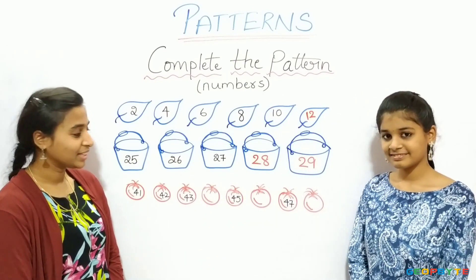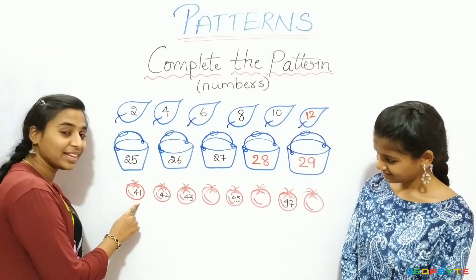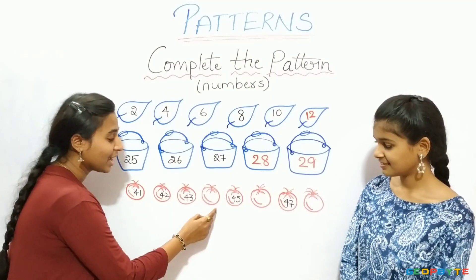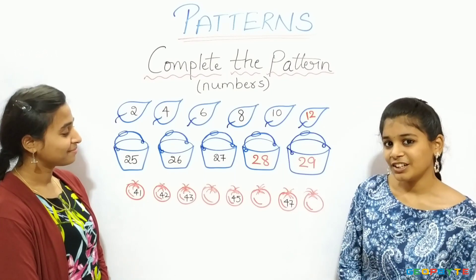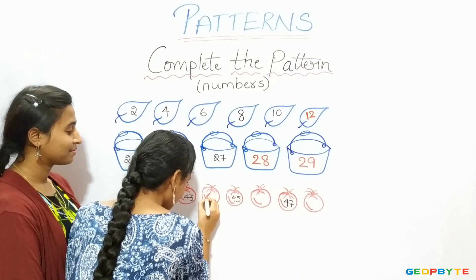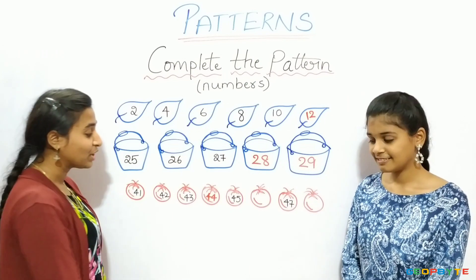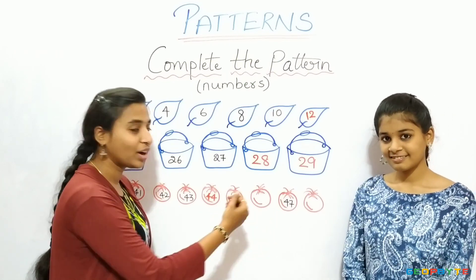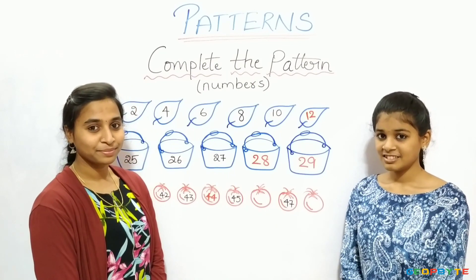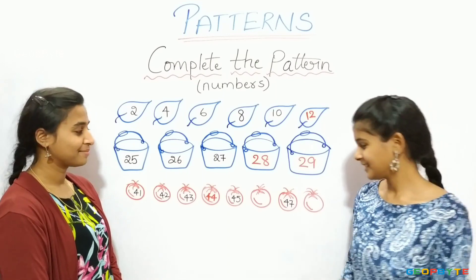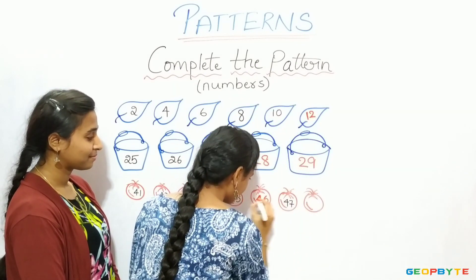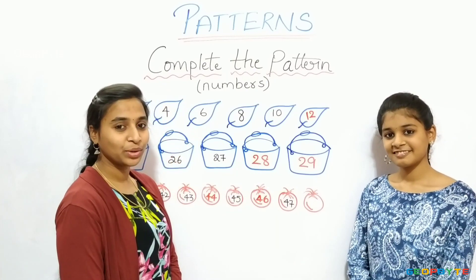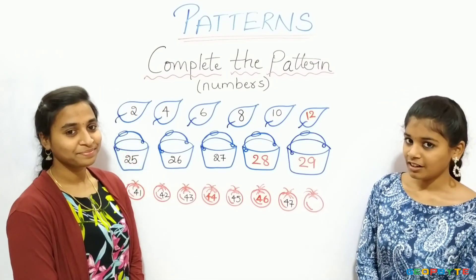Now let us go with these tomatoes: 41 in the tomato, 42 in the tomato, 43 in the tomato. After 43, which number comes? 44. Let us write 44 in the tomato. Then 45 — after 45 and before 47, which number comes? 46. Let us write 46. Then 47 — which number comes next? 48. Let us write 48 in this tomato.